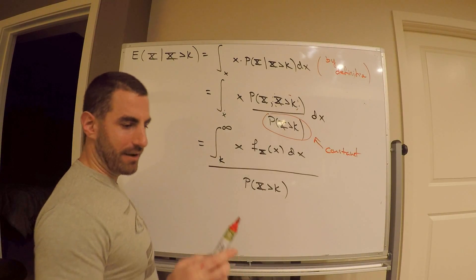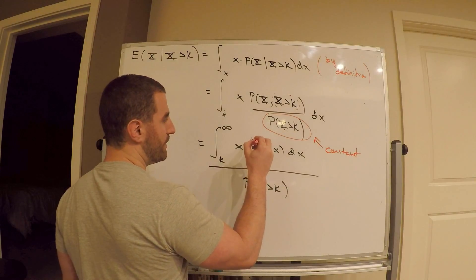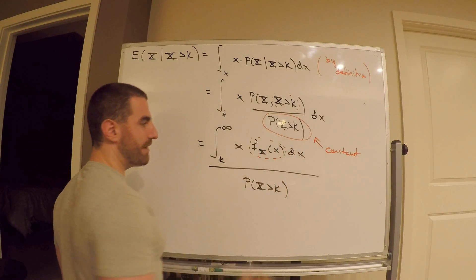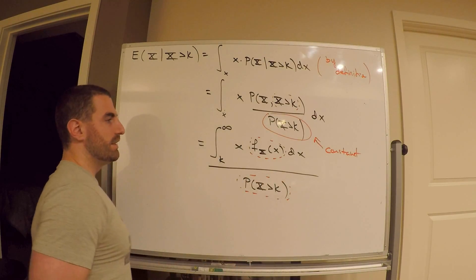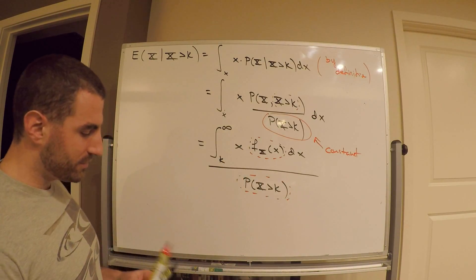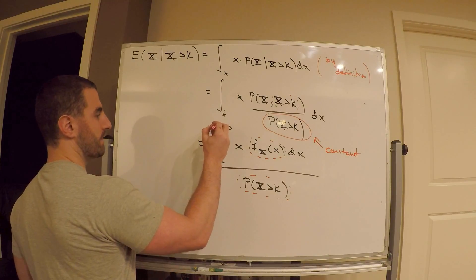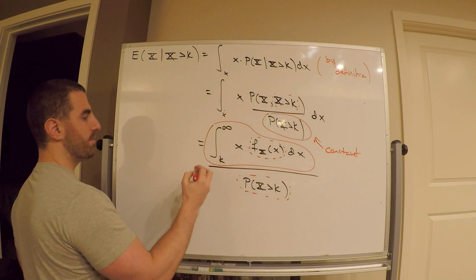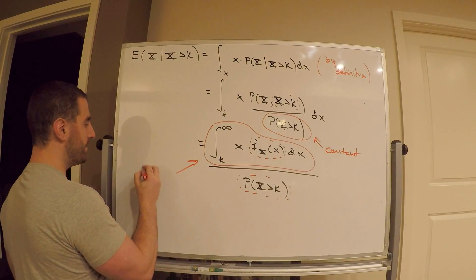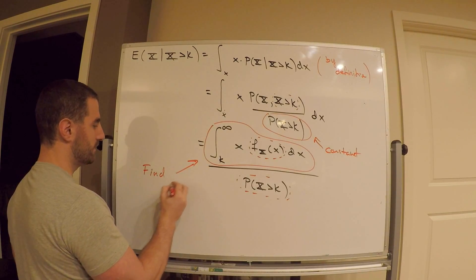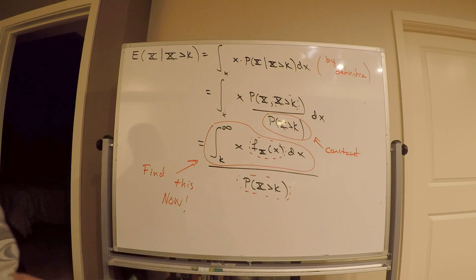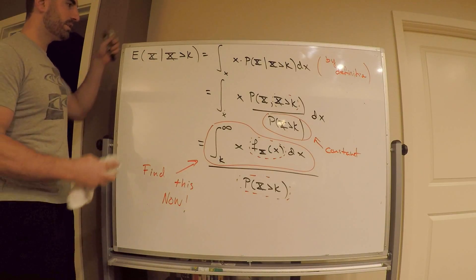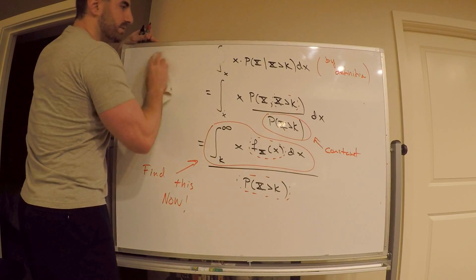Think about what we have now. We just found the density function of x. We don't have this yet, but we will. I want to now concentrate on the numerator. We're breaking this down into parts. This is going to take a little bit of work — you've got to do some substitutions. It's just some calculus.